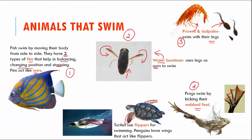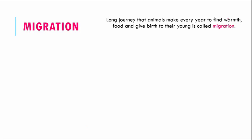Now that we've covered different kinds of movement, let us look at an interesting phenomenon called migration. Certain animals travel very long distances in search of food, shelter, or to escape from cold. The long journey that animals make every single year to find warmth, find food, and give birth to their young is called migration.